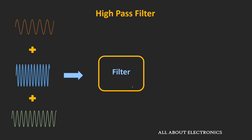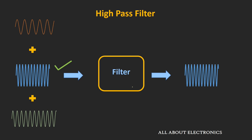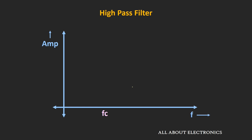As its name suggests, this high pass filter passes the high frequency components from the input signal and attenuates or rejects the low frequency components. If we see the frequency response of an ideal high pass filter, this filter passes all the high frequency components greater than the cutoff frequency fc, and rejects all the frequencies less than fc.